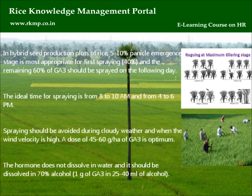A dose of 45–60 grams per hectare of GA3 is optimum. The hormone does not dissolve in water and should be dissolved in 70% alcohol: 1 gram of GA3 in 25–40 ml of alcohol.